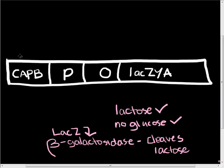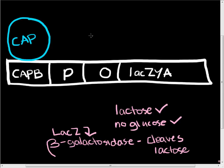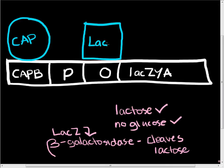For this sensing system, two different regions are used: the lacO region, which is bound by the lacI protein, and the CAP binding site. Both are regulated by small molecules. The CAP binding site is regulated by the secondary messenger cAMP, and the lacI protein is regulated by allolactose.